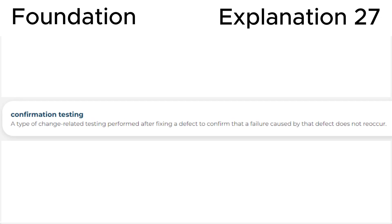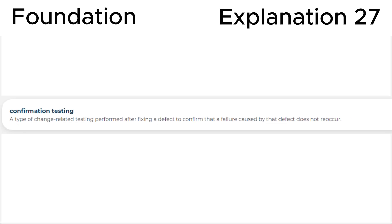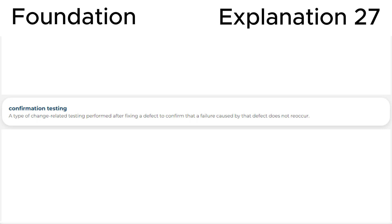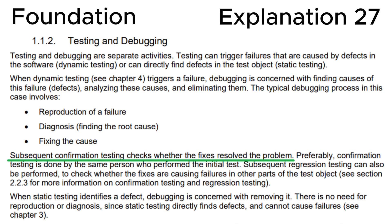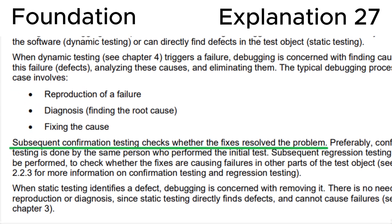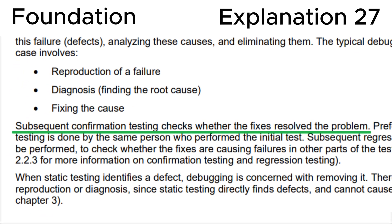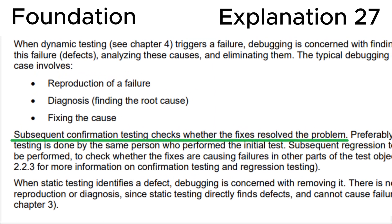Confirmation testing is a type of change-related test performed after fixing a defect — this is debugging — to confirm that a failure caused by the defect doesn't reoccur. Looking at section 1.1.2, testing and debugging in the ISTQB syllabus, we see the following statement: 'Subsequent confirmation testing checks whether the fixes resolve the problem.' You should clearly understand what confirmation testing is.